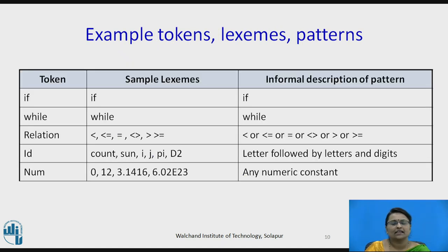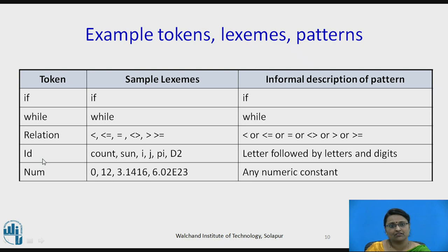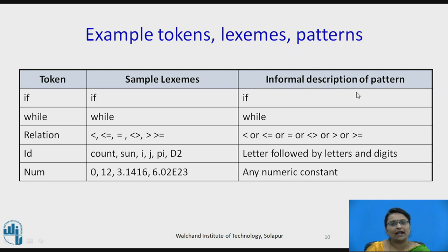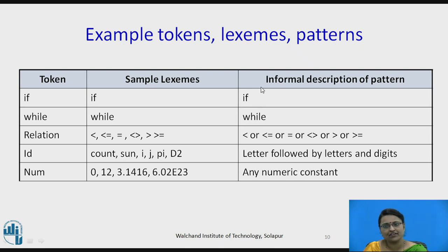Consider this table providing detailed information. The token is what the lexical analyzer provides to the parser — the categories. The lexemes are the sequences of characters given as input, and the descriptions are the patterns being matched. For example, the keyword 'if' is a lexeme matching exactly the two characters i and f, and it generates the token 'if' as a keyword. Similarly, 'while' is a lexeme matching exactly w-h-i-l-e, generating the token 'while'. In any programming language, keywords match patterns that are exactly their character sequences.